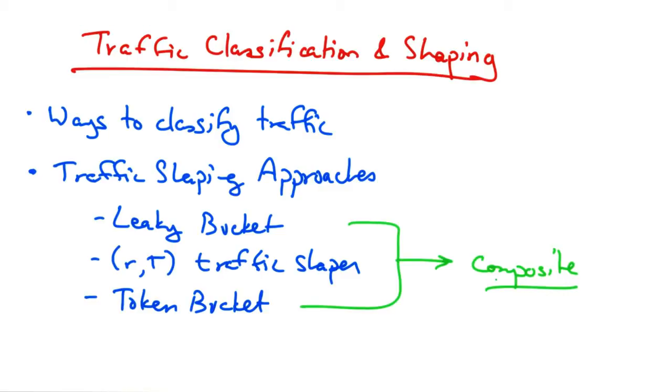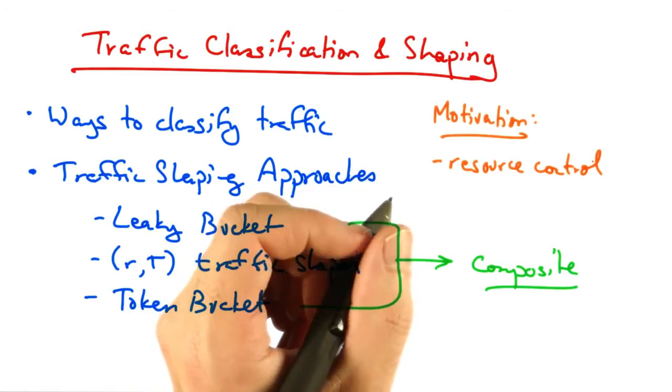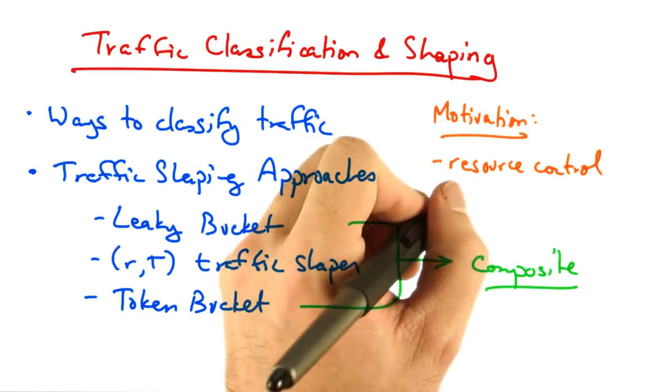And finally, we'll talk about how to combine a token bucket shaper with a leaky bucket shaper to build what's called a composite shaper. The motivation here is to control network resources and ensure that no traffic flow exceeds a particular pre-specified rate.